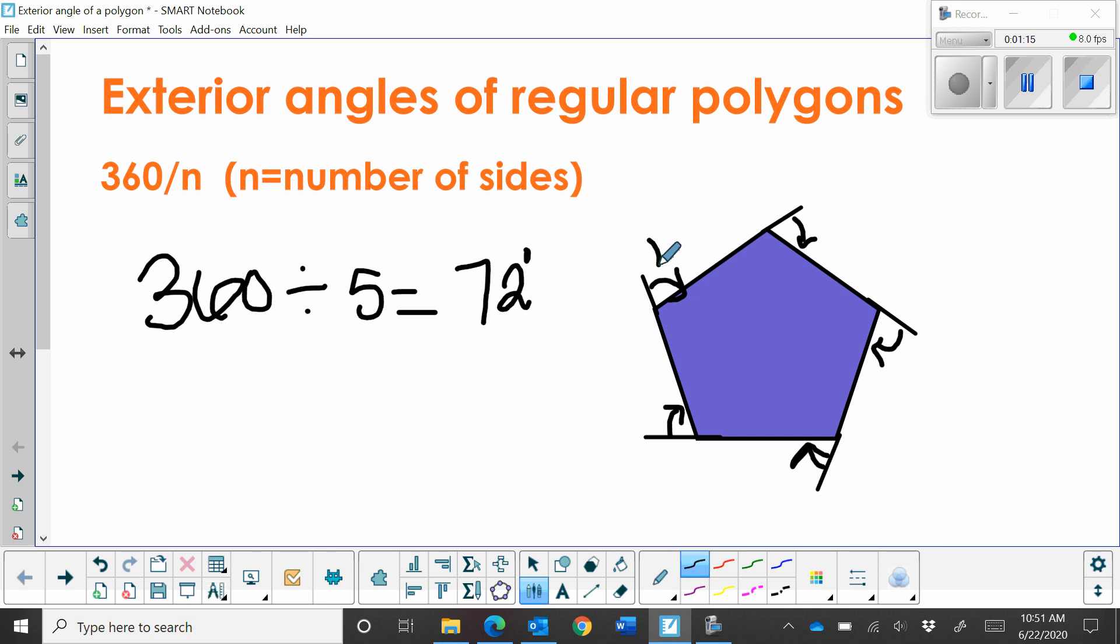So that means this exterior angle is simply 72 degrees. And since it is a regular polygon, all five of these are 72 degrees.